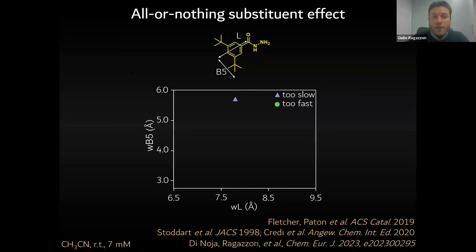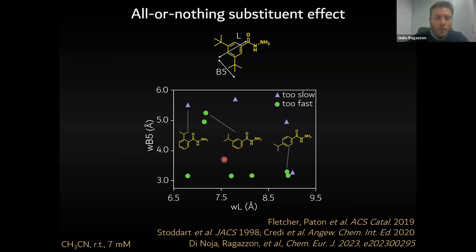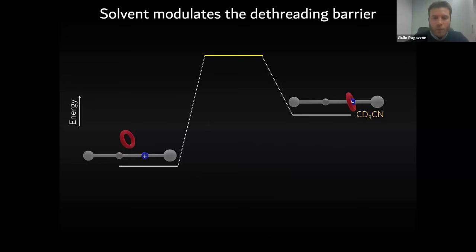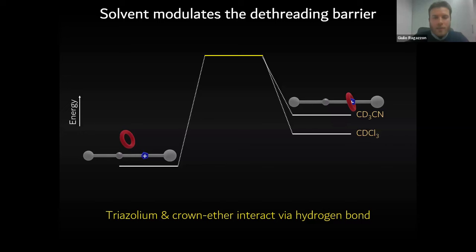We tested several hydrazones and tried to rationalize our observations using steric parameters. Parameter L indicates the length of a given substituent, and parameter B5 indicates the longest distance perpendicular to the direction of parameter L. We can plot each hydrazone in a graph with L on one axis and B5 on the other, weighted for the Boltzmann population of different conformations — hence W before these parameters. Hydrazones that are blocked and dethread slowly are on the periphery of this graph: we need the combination of large B5 and large L to block the system. We noticed that isopropyl-substituted hydrazones fall in both categories: the ortho-substituted isopropyl hydrazone is blocked, the meta dethreads very fast, and the para dethreads fast but is close to another blocked derivative.